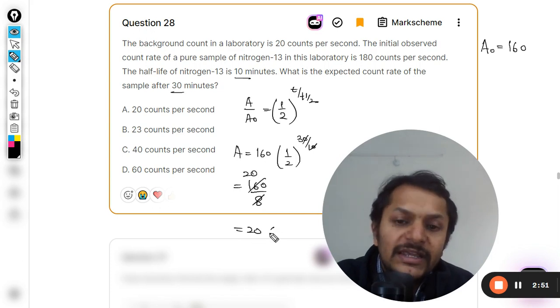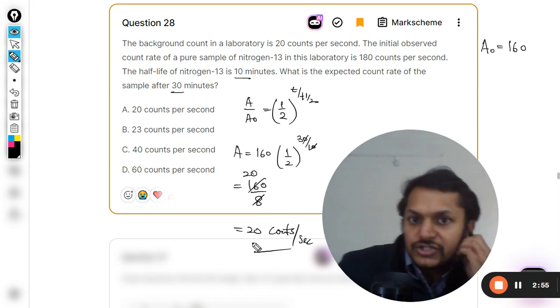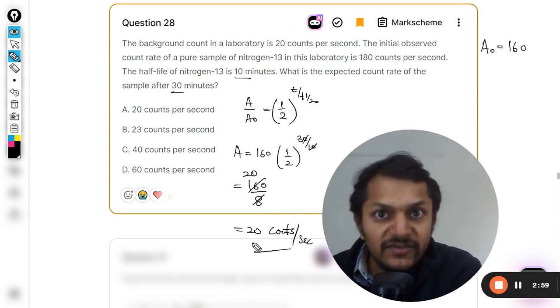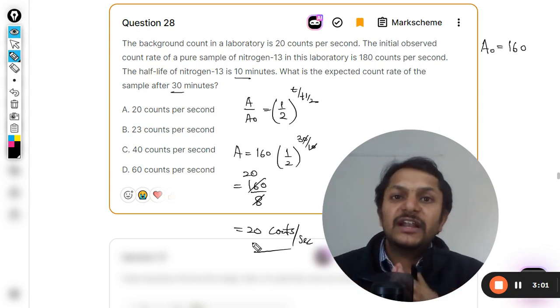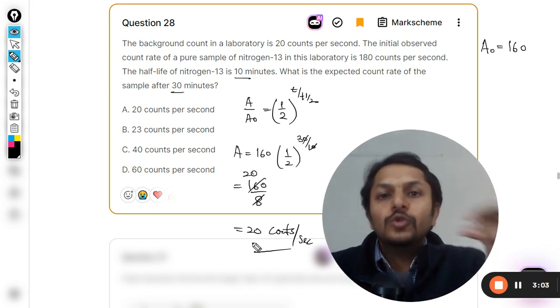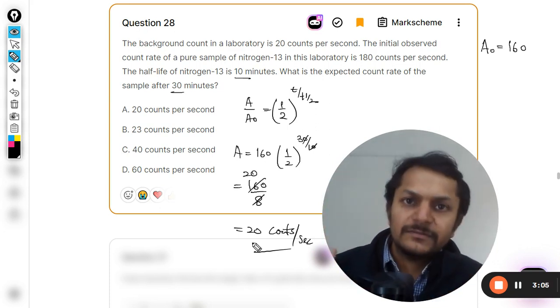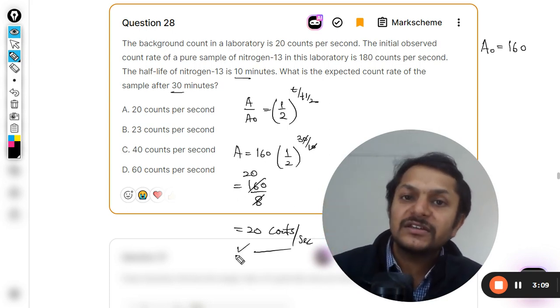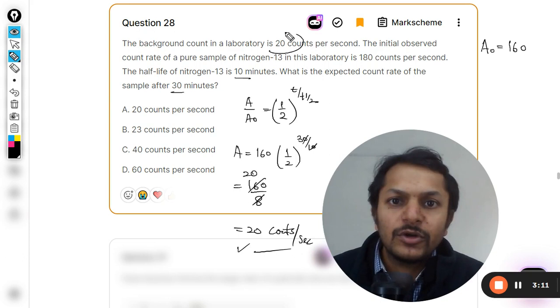So it is 160 divided by 8, which clearly becomes 20 counts per second. Actually, the sample's activity will reduce itself from 160 to 20 in 30 minutes.